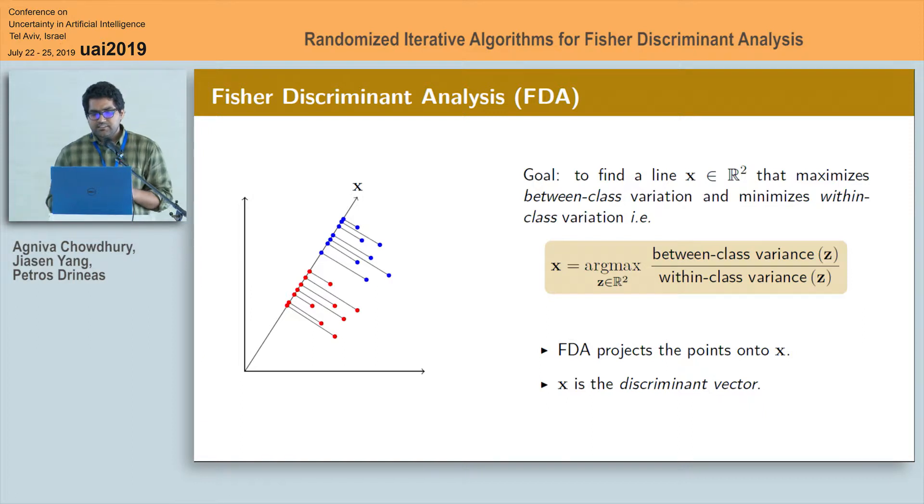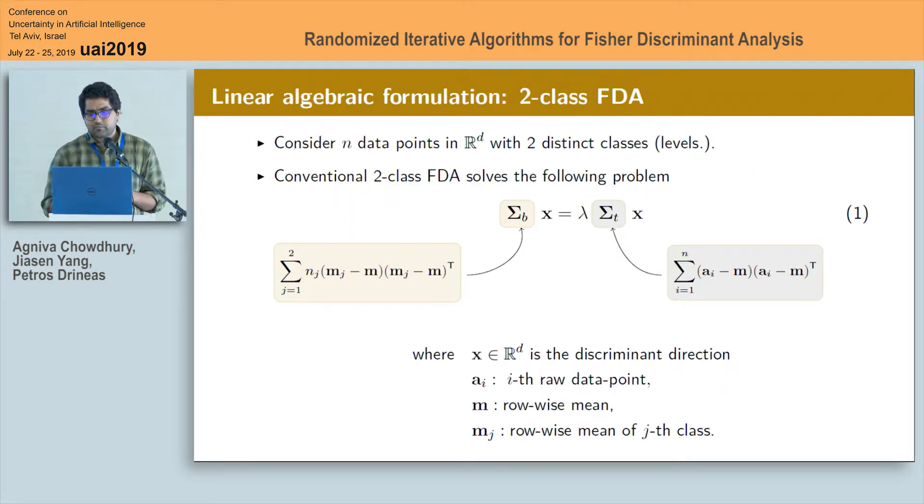Therefore, X is basically the maximizer of the ratio of between class variance and within class variance of this projected data points and it is also called the discriminant vector. Next, we generalize this from 2 dimension to D dimension